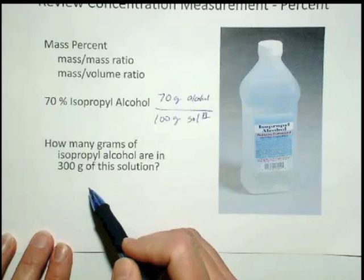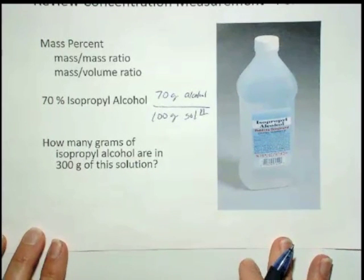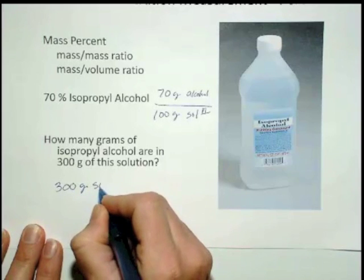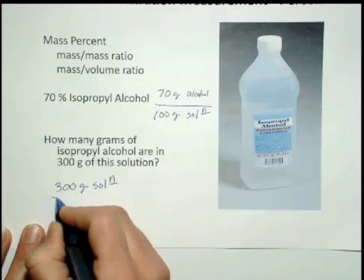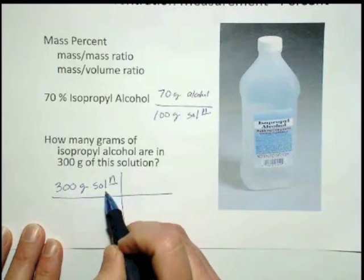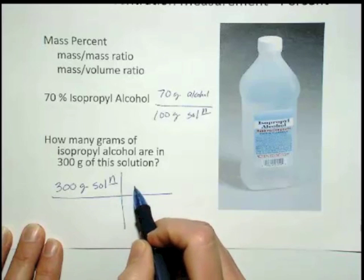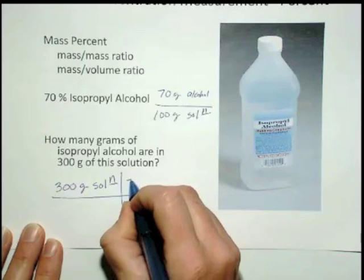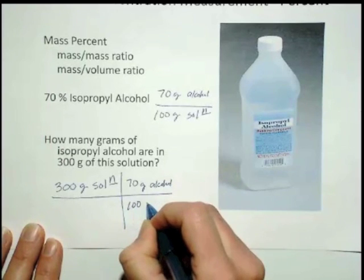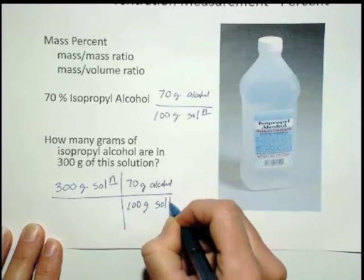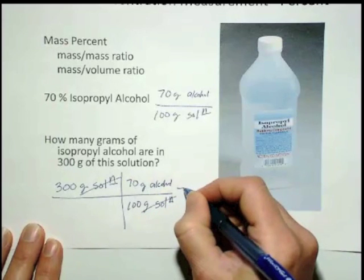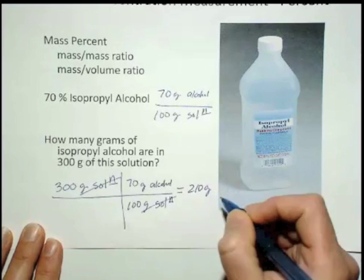It could be 70% times 300 to figure it out. Or you could use the dimensional analysis approach, where you start with what's given, which is 300 grams of solution. The concentration of this solution is 70 grams of alcohol per 100 grams of solution. The grams of solution unit cancels, so it's just 300 times 70 divided by 100, and that equals 210 grams of alcohol.